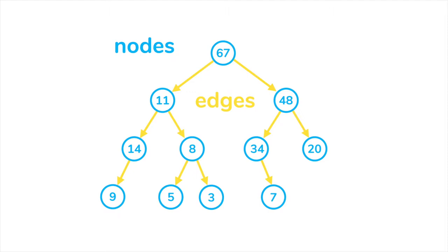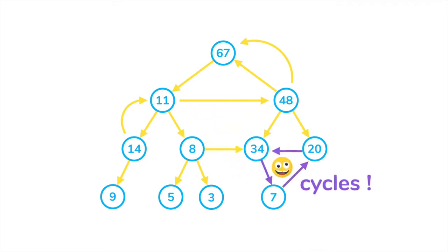What if these edges got a little bit crazy and started to point to other things? For example, a child node starts to point at its parent, and then they start to point to each other or even point to nodes in other branches making cycles and even pointing to itself.